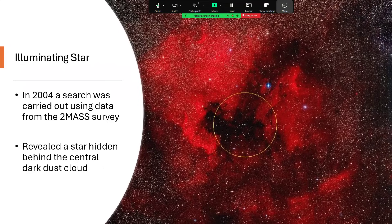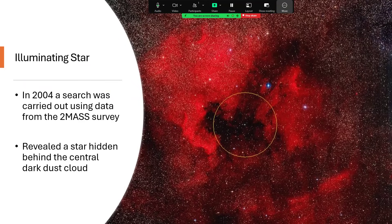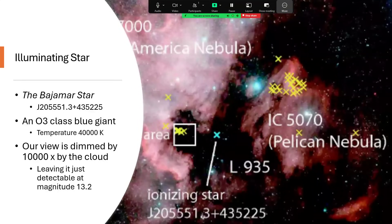In 2004 a search was carried out using data from the two mass survey within that orange circle, roughly centered. Whatever's doing this you can tell by the distribution of light that it needs to be somewhere near the center of this vast region and actually probably behind the dark dust cloud that's obscuring whatever it is that's releasing all of these high energy photons across such a wide area.